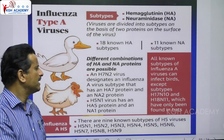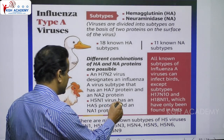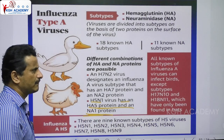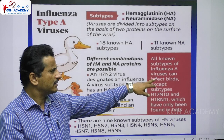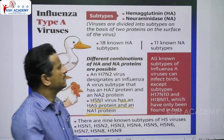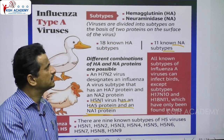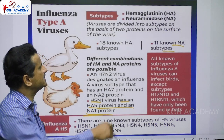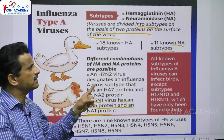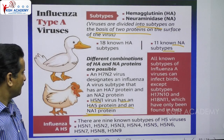Different combinations of HA and NA proteins are possible. For example, an H7N2 virus has H7 protein and NA2 protein; an H5N1 virus has HA5 protein and NA1 protein. All known subtypes of influenza A virus can infect birds, except subtypes H17, H18, N10, and N11. There are 11 known NA subtypes. Viruses are divided into subtypes based on two surface proteins: hemagglutinin (HA) and neuraminidase (NA).